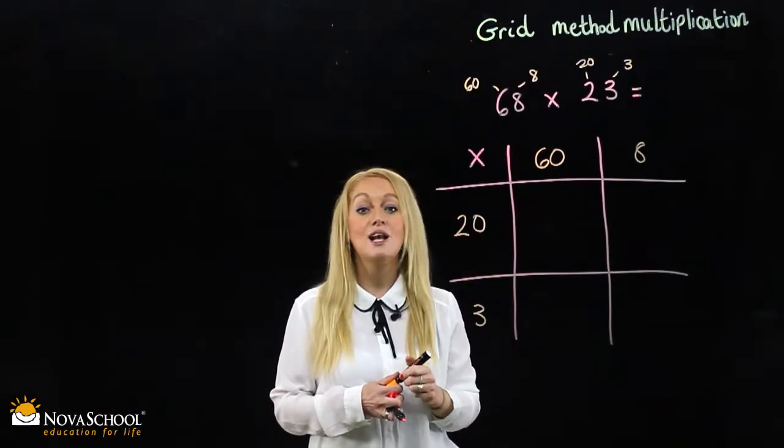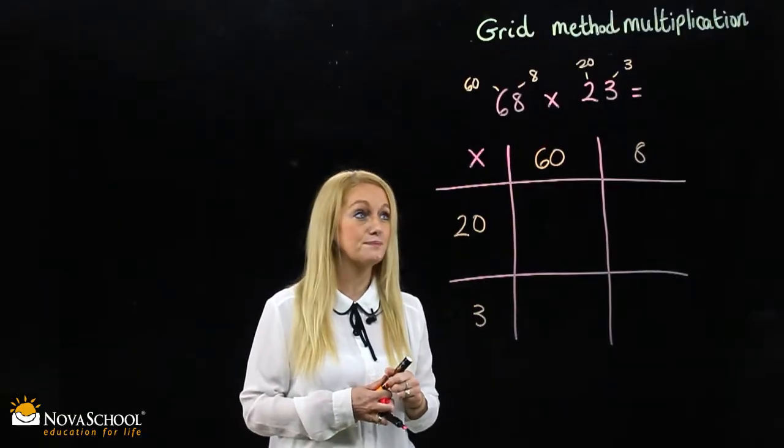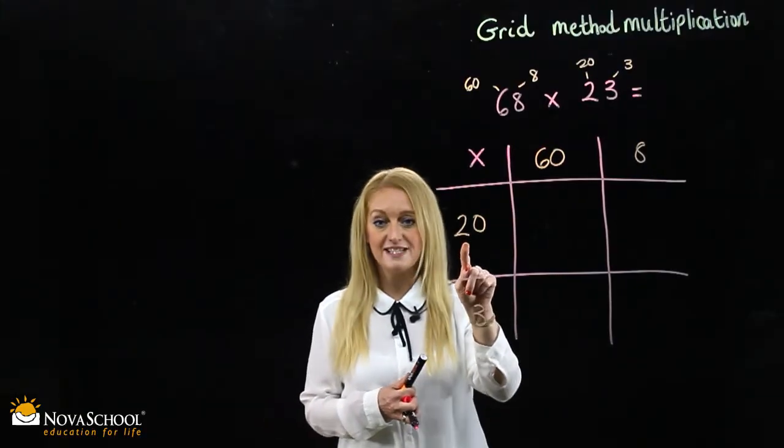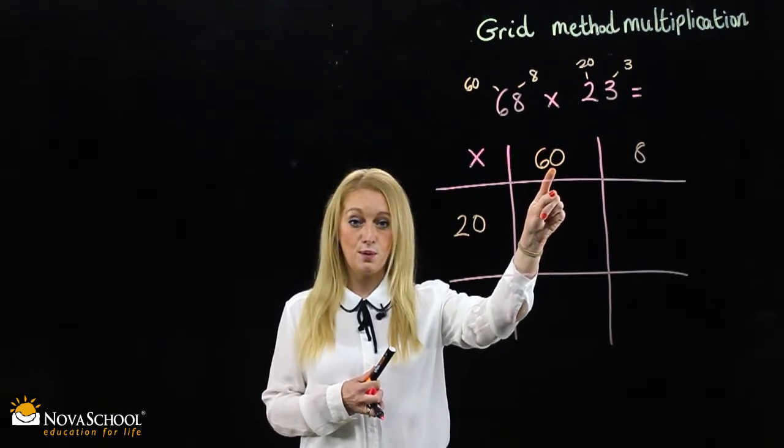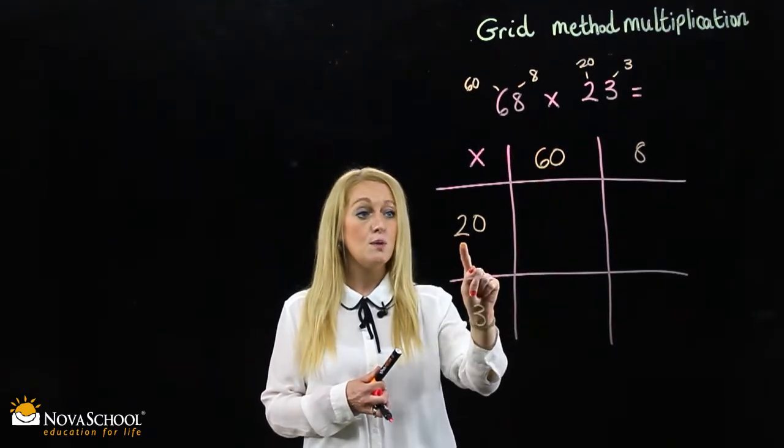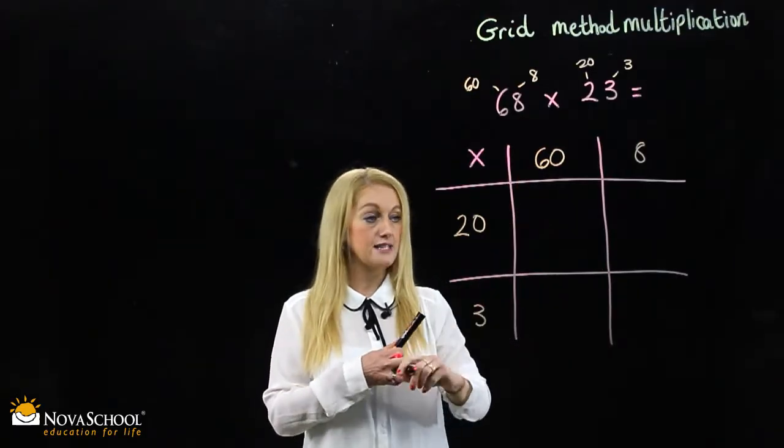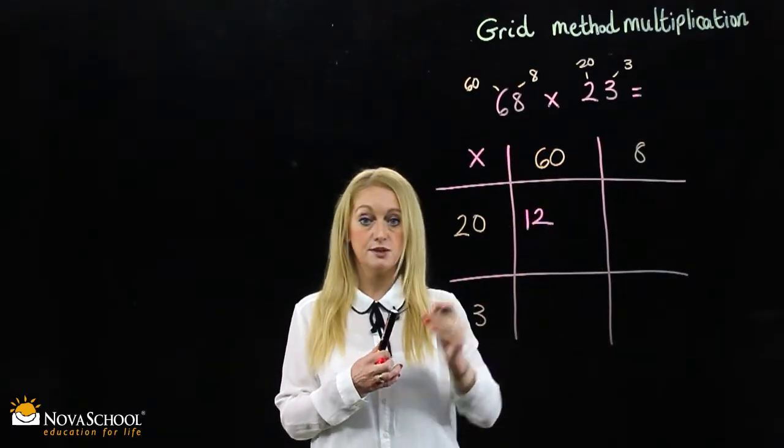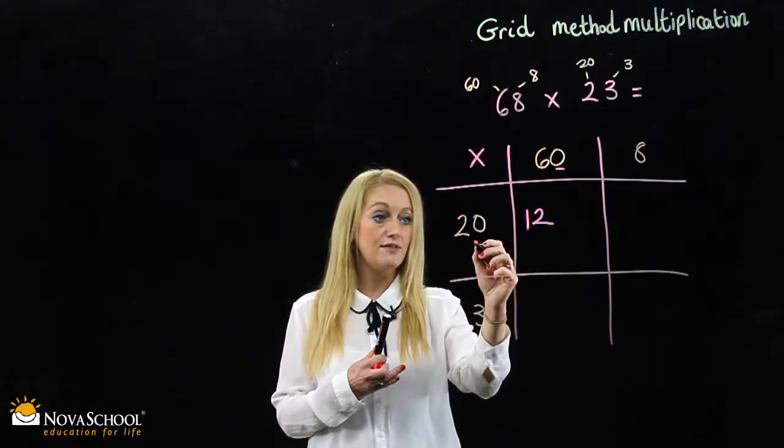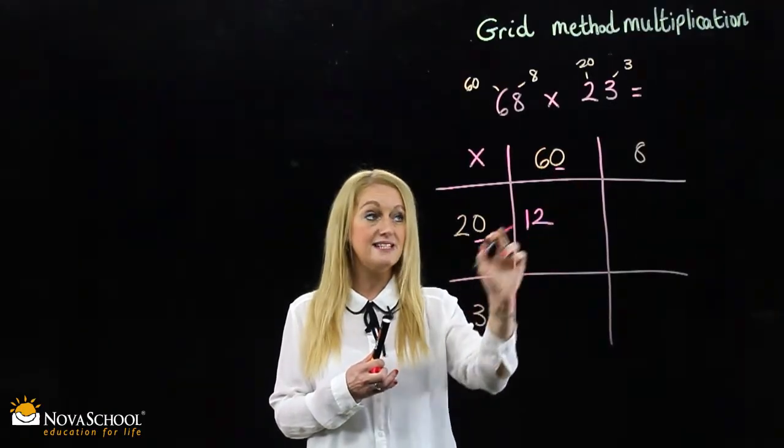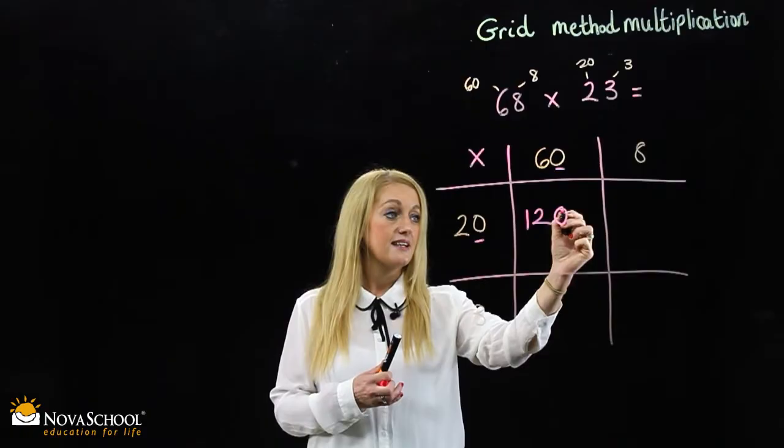Okay, now let's complete the calculation. We start with the 20 here and we multiply it by 60. Okay, let's make this easier. What's 2 times 6? 12, correct. Now what do we do? We place our two zeros that we have in the 20 and the 60 in our answer.